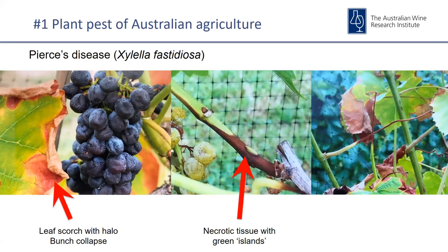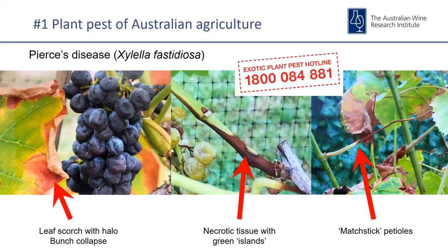Berries can start to collapse, and you can see what we call a matchstick petiole — where the leaf falls off and the petiole shows necrotic tissue extending from the end, resembling a burnt match. The usual abscission point is at the cane, so this is quite uncommon. I'm not aware of anything else that causes this matchstick-looking petiole. I hope we don't find Xylella in Australia, but everyone should familiarize themselves with the symptoms, and if you do see them please call the 1-800 number.